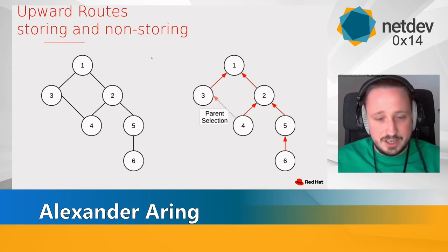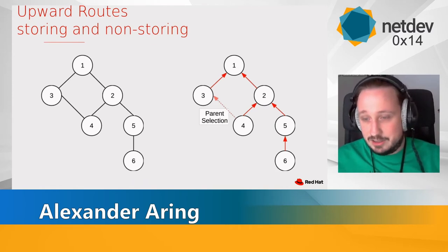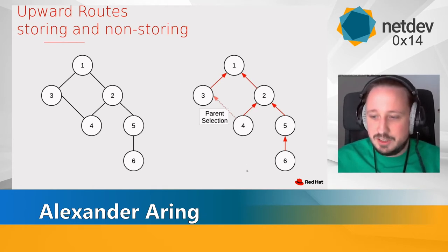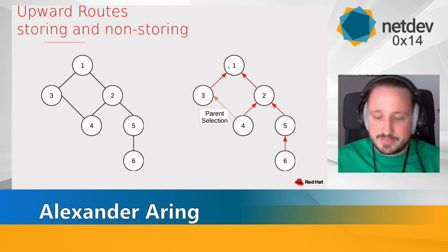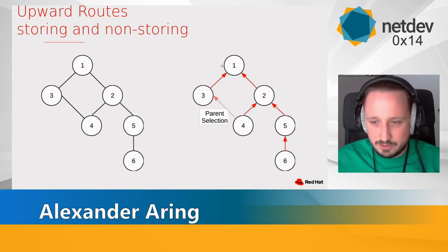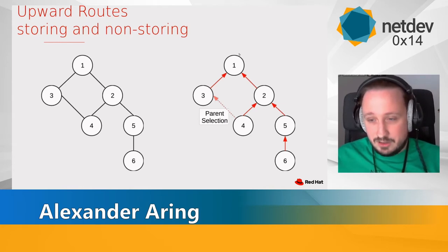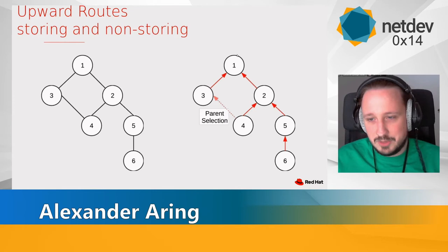Upward routes are, as the name implies, how nodes can reach the root node. For example, on the left side you can see a basic simple topology, and on the right side a tree-like topology which RPL can build up. An upward route means, for example, how node 6 can reach the root node. Especially at the root node, you have something like a border router node which, in the context of 6LoWPAN, makes a translation from a 6LoWPAN IPv6 network to the real IPv6 world. You can imagine the root node 1 has a connection to the internet, and everything else is your private sensor network.